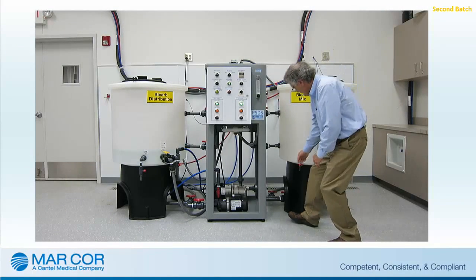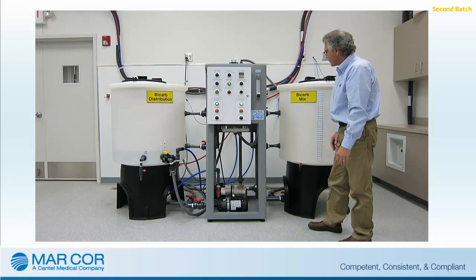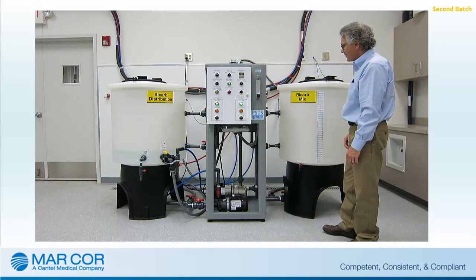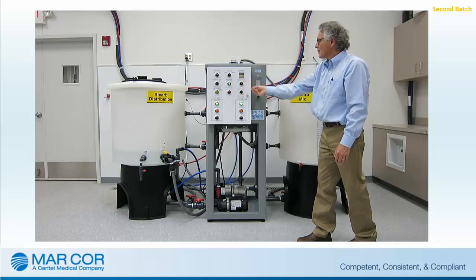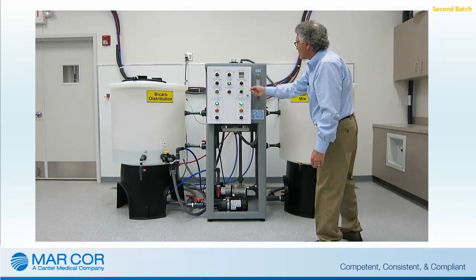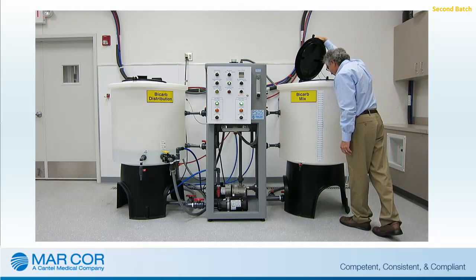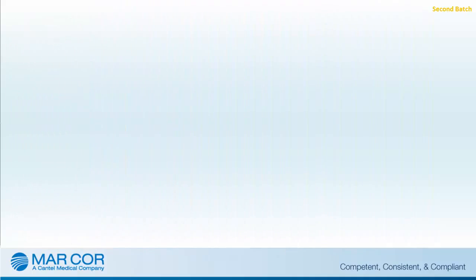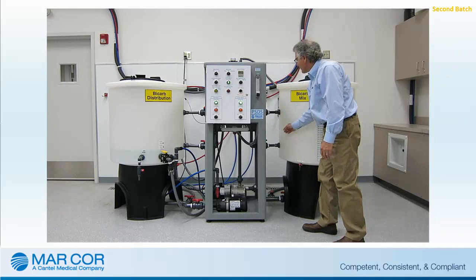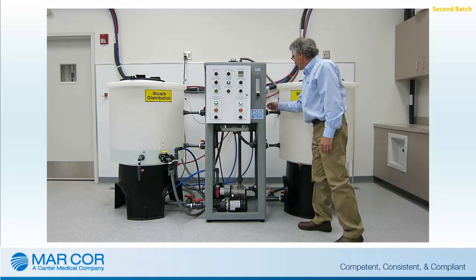After the mixed tank has been emptied by transferring the previous batch of bicarb to the distribution tank, an additional batch of bicarb may be made. Before another batch can be prepared, the mixed tank should be rinsed with AMI quality water to rinse out any residual bicarb. Since bicarb is typically only used for the day that it is made, the second batch may be smaller than the first batch, depending on the volume of bicarb concentrate needed for subsequent shifts. The operator will need to determine the amount of water that will be needed for the specific amount of bicarb solution that is being prepared.